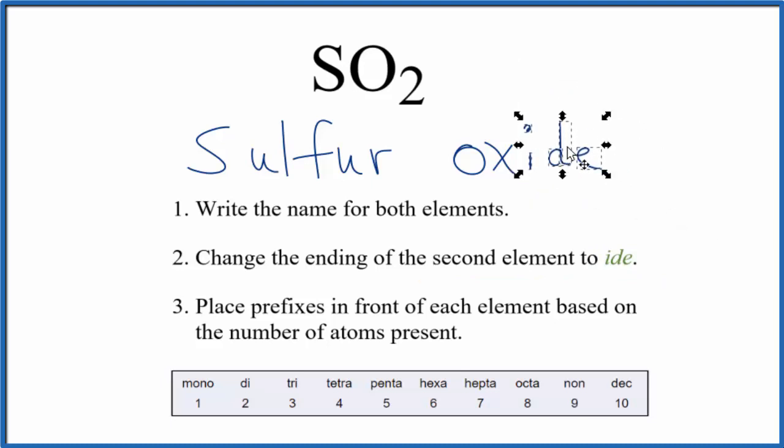So at this point, we have sulfur oxide for the name for SO2. But we need to take into account these subscripts here. We have a one here. It's not written, but it's there. And then the two.